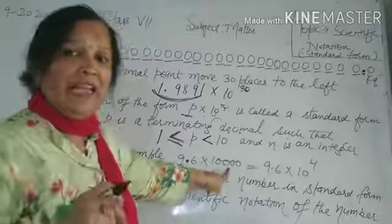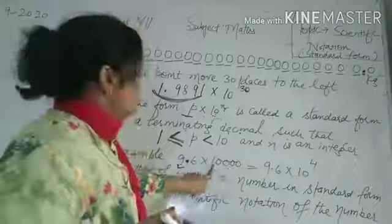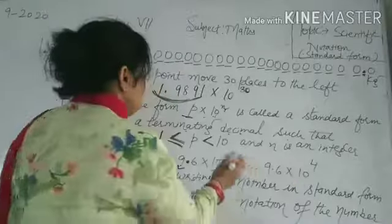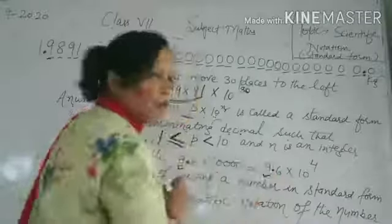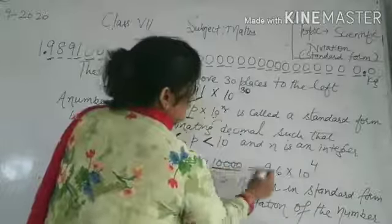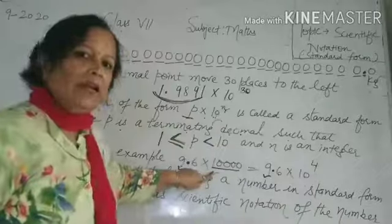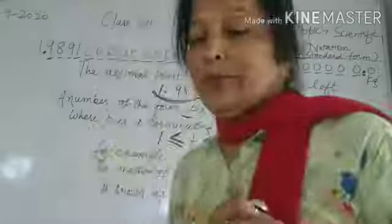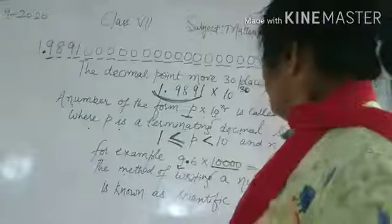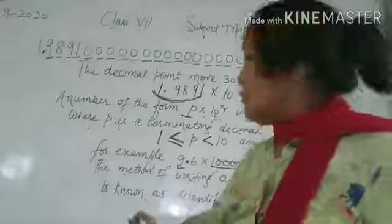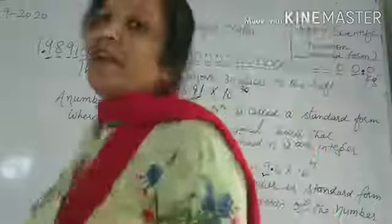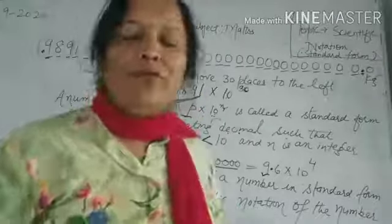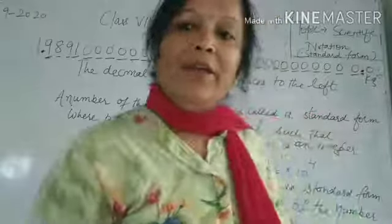So 9.6 × 10,000 is already in standard form: 9.6 into 10 raised to power 4. The method of writing a number in standard form is known as scientific notation of the number. Writing any number in standard form means expressing it in scientific notation.